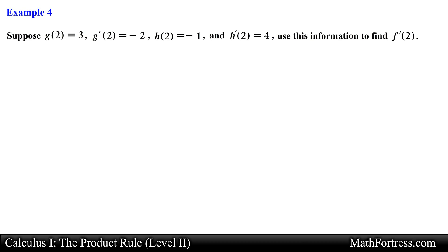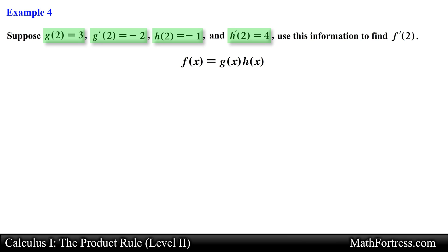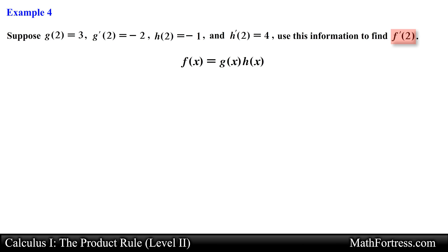Now let's try a completely different type of problem. Suppose g of 2 equals 3, g prime of 2 equals negative 2, h of 2 equals negative 1, and h prime of 2 equals 4. Use this information to find f prime of 2, where f of x equals g of x times h of x. We are given values for the functions g and h and their respective derivatives evaluated at x equals 2. Note that some textbooks might ask this question using equivalent forms such as: the derivative of g times h evaluated at x equals 2.